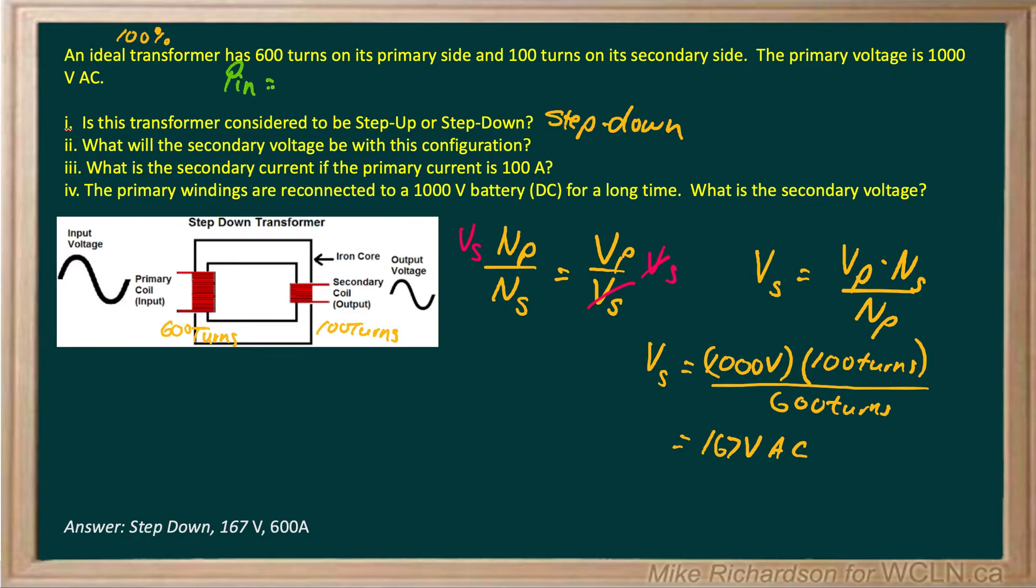And that's simply because power in has to equal power out. My input power is V primary times I primary. And my output power is V secondary times I secondary for an ideal transformer where we're assuming no losses.